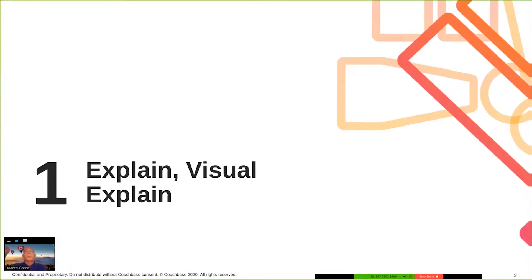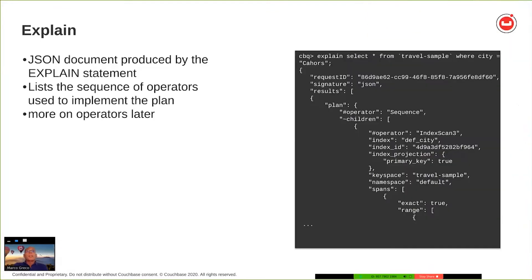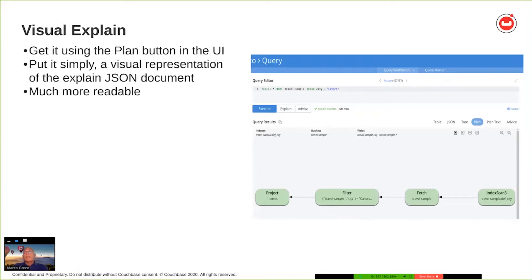The first thing one needs to do in order to optimize a statement is to get the query plan. This is done with the explain statement, whose output is a JSON document with a sequence of steps. The steps are represented by items called operators which describe every single action that needs to be done. Visual Explain is implemented in the query tab and executes an explain statement behind the scenes in order to get the plan. So what you do is you type your statement in the query editor.